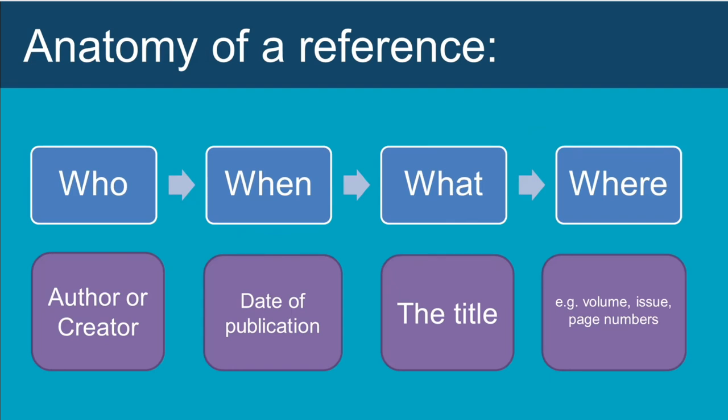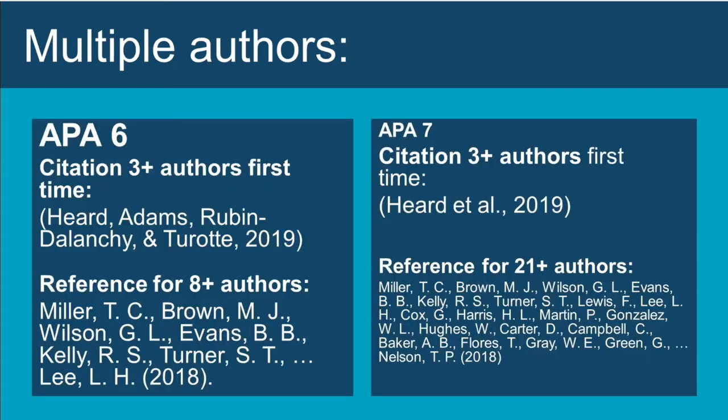Here is a quick reminder of what a reference looks like and the different parts you need to include. There are no real changes to your in-text citations — it's still author, date, and a page number when needed. One helpful change in APA 7: if there are three or more authors, you only have to put the first author and et al. in your citation, which should save you some time and words.